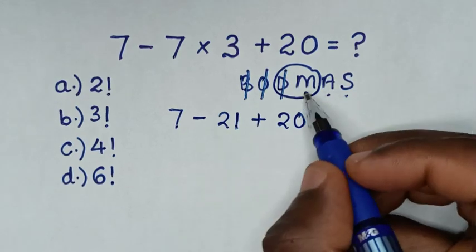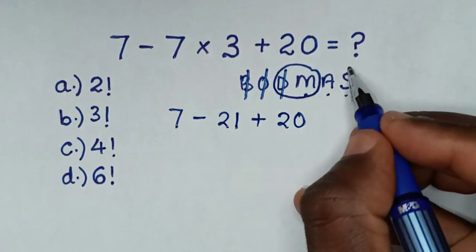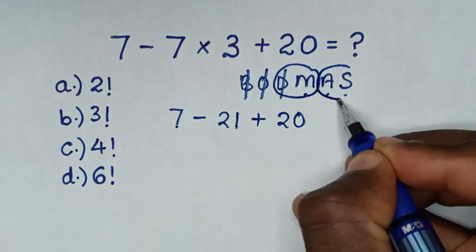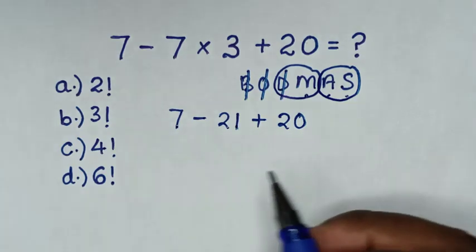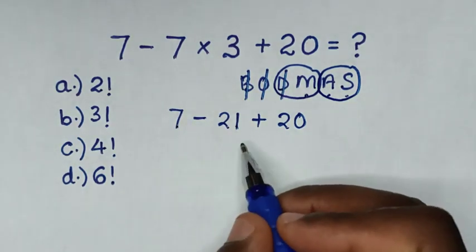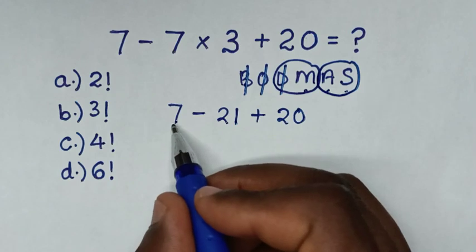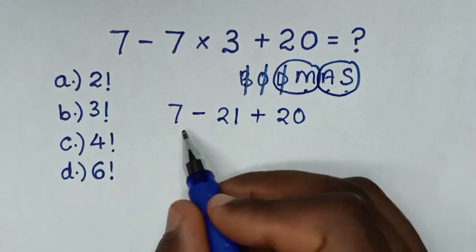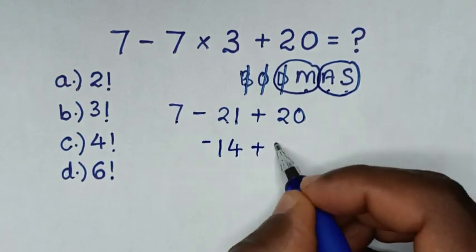Then after we already finish the multiplication, we deal with addition and subtraction according to what starts first. So it starts first with subtraction then addition. We deal with 7 minus 21, which is negative 14, then plus 20.